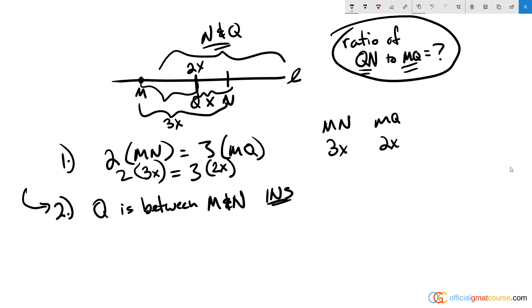So we know that the ratio of qn, which is equal to x, to mq, which is equal to 2x, is a ratio of 1 to 2, and that is sufficient. So statement one on its own is sufficient, and that means answer choice A is our answer.